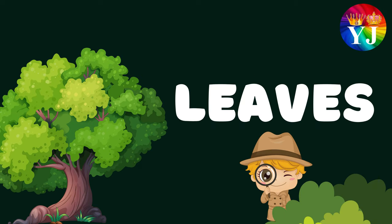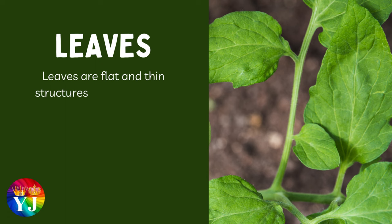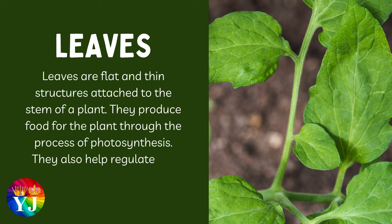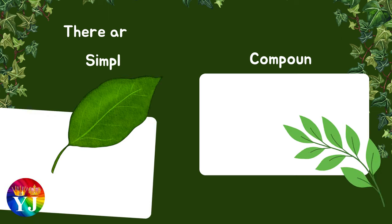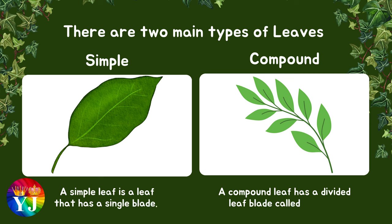Leaves are flat and thin structures attached to the stem of a plant. They produce food for the plant through the process of photosynthesis. They also help regulate the exchange of gases with the surroundings. There are two main types of leaves: simple and compound. A simple leaf is a leaf that has a single blade. A compound leaf has a divided leaf blade called leaflets.